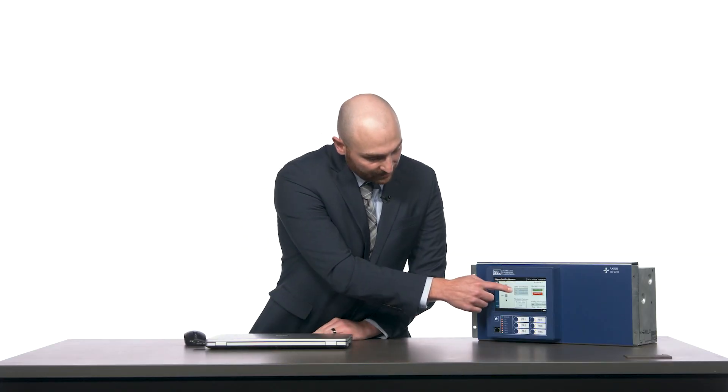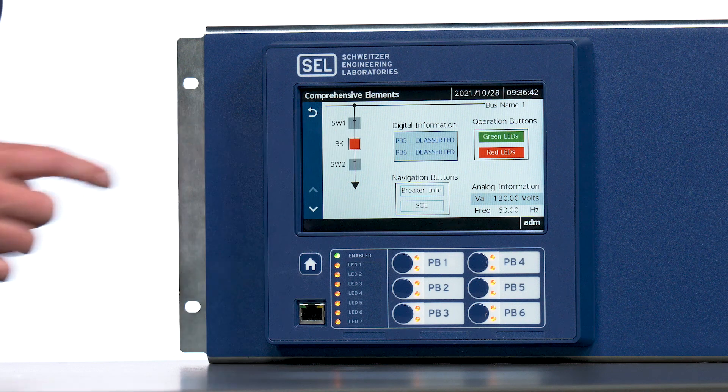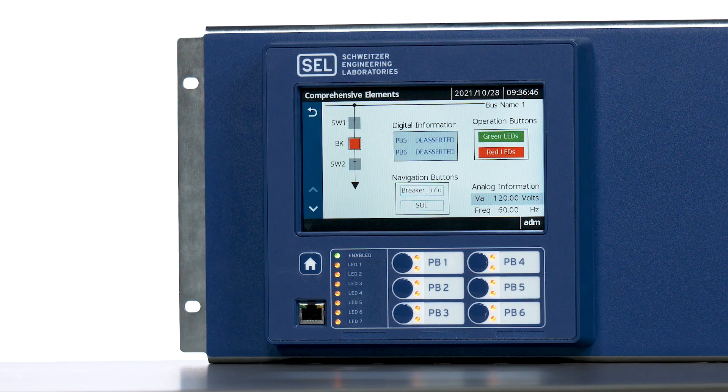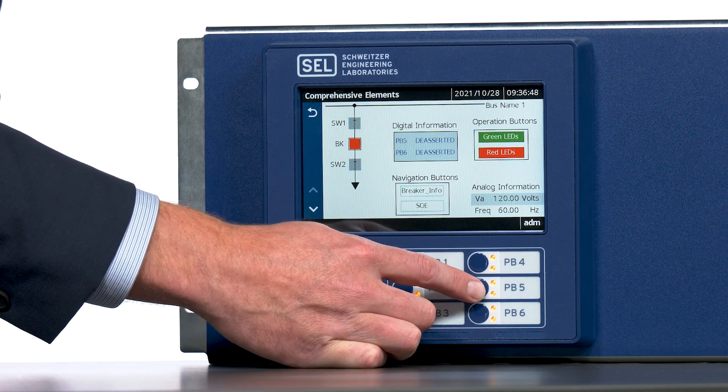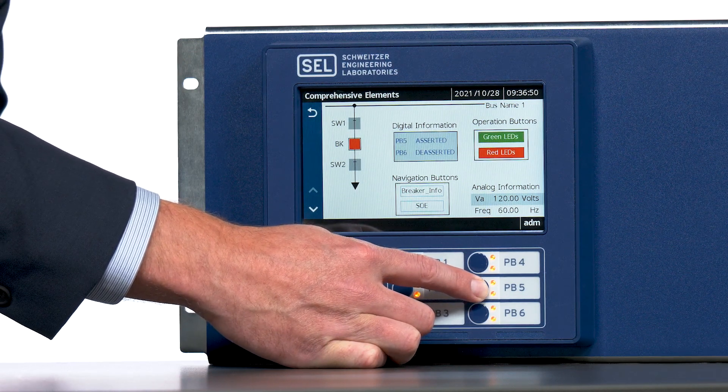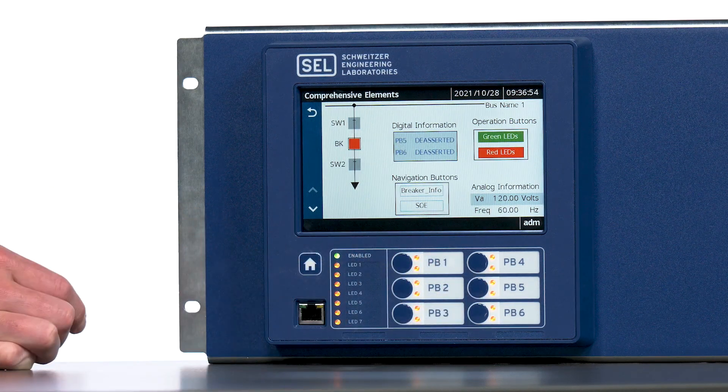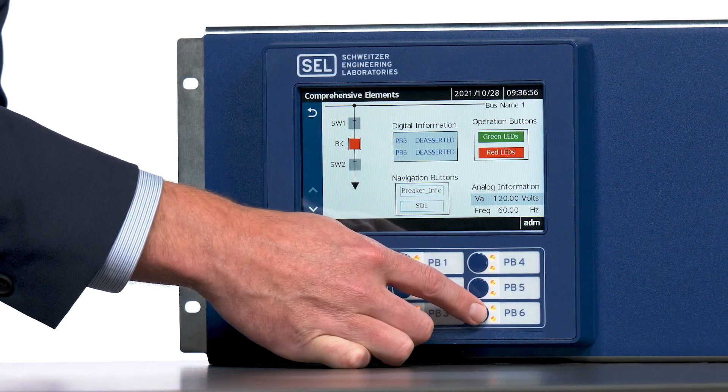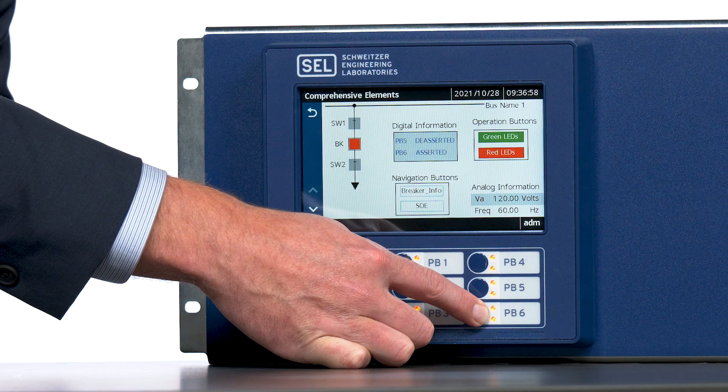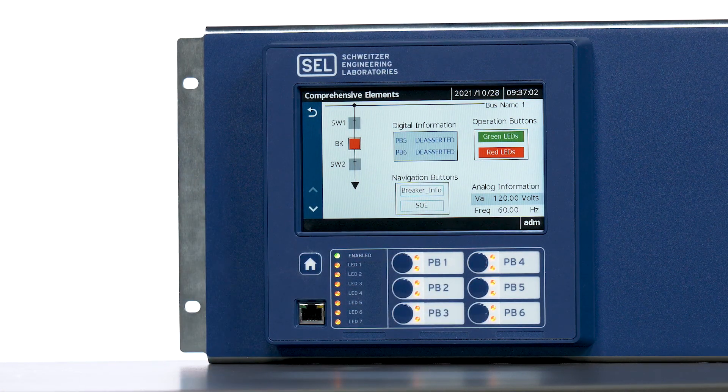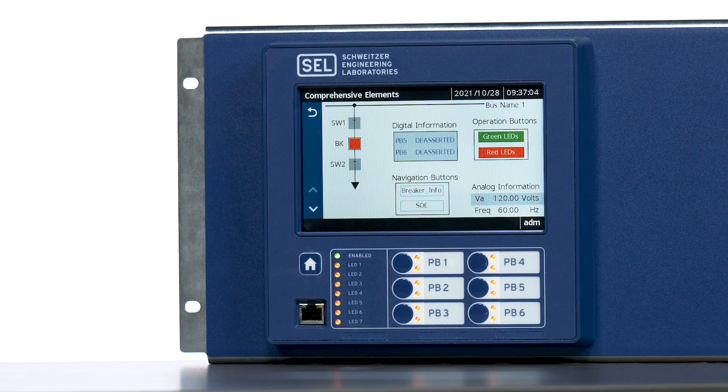We have two digital labels mapped to push button five and push button six. Right now we can see they are in a deasserted state. Pressing push button five, we can see the screen reflects that push button five is asserted. Let's repeat that with push button six. Releasing those buttons, we see the digital label change from asserted to deasserted.